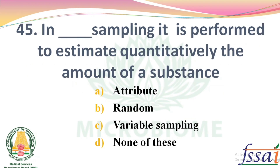In dash sampling, it is performed to estimate quantitatively the amount of a substance. Options: Attribute, Random, Variable sampling, None of these. The right answer: Option C, Variable sampling.